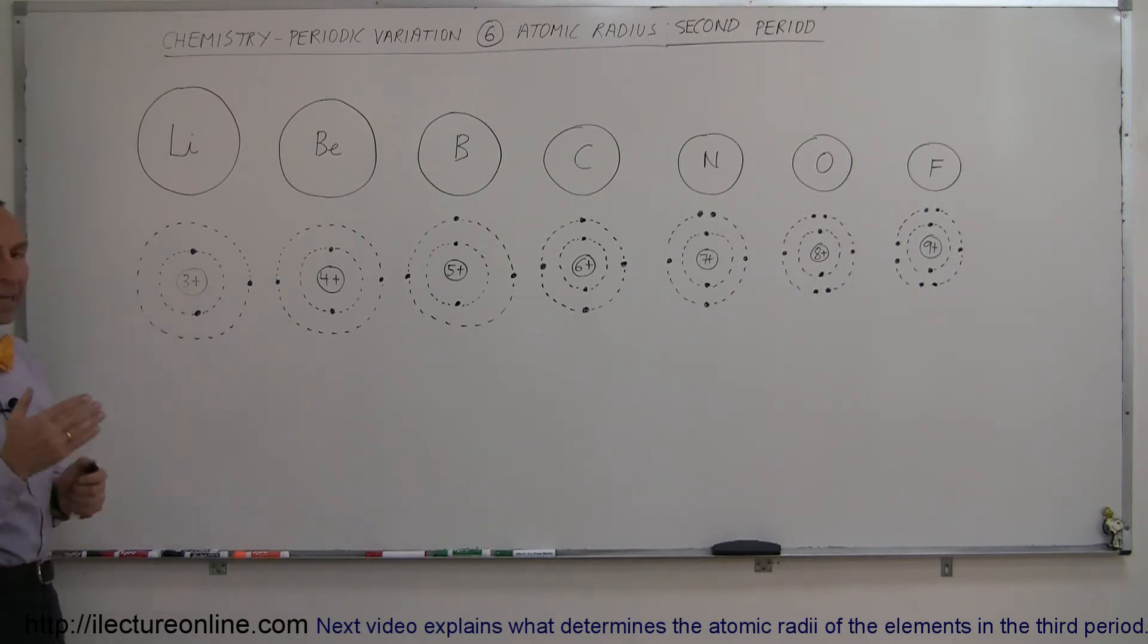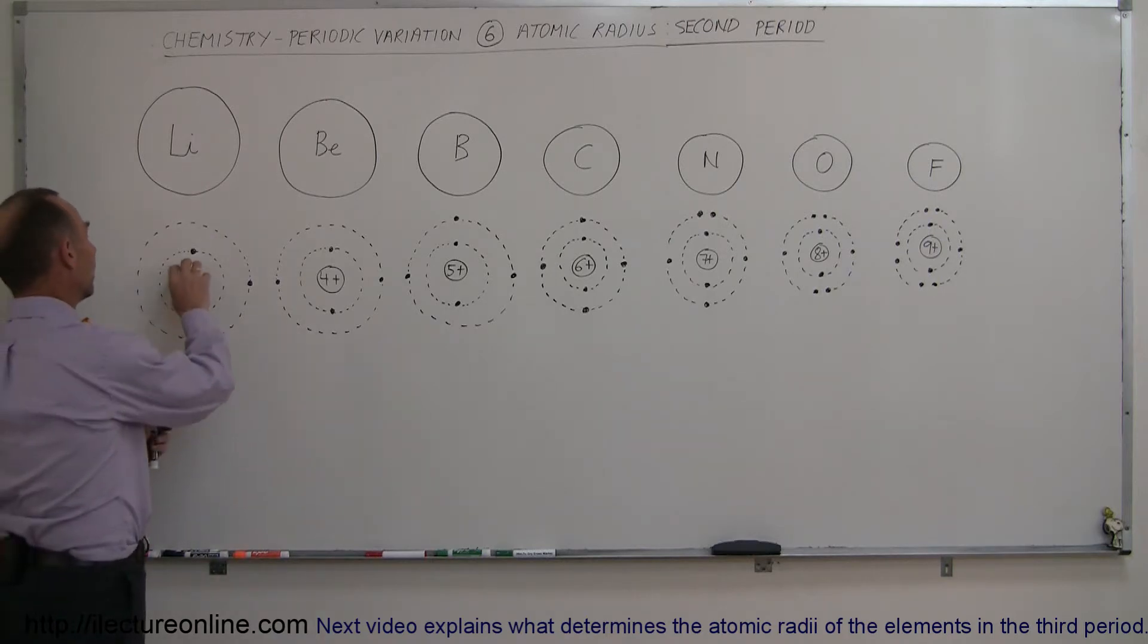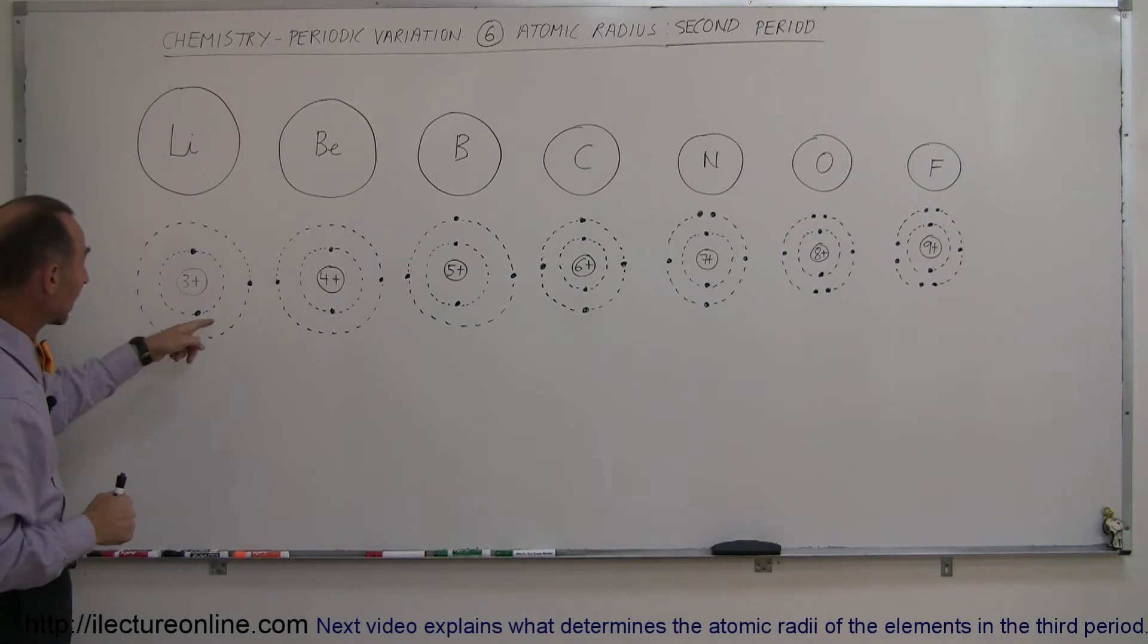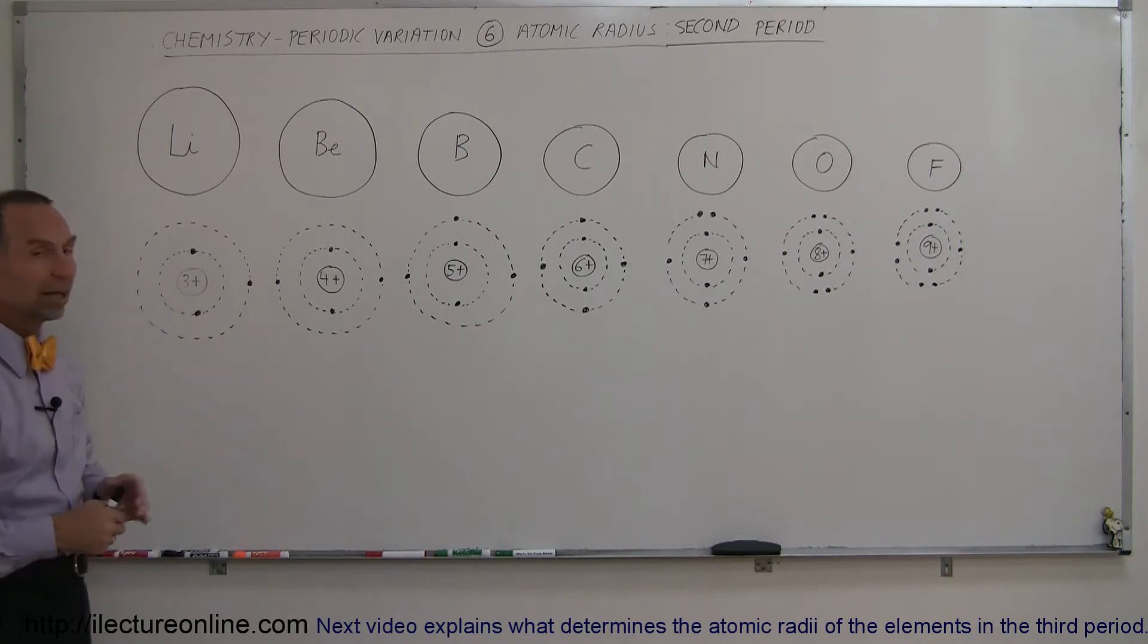So going from helium, which is one nucleus with two charges and just two electrons around the nucleus, we now go to lithium, which has a third electron and a third charge in the nucleus. And the third electron has no room on the inner energy level, so the third electron is found in the S orbital on the second energy level.